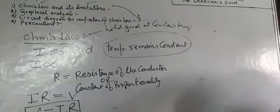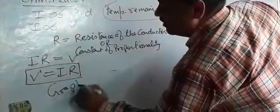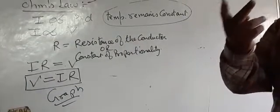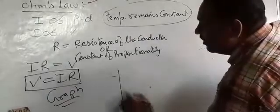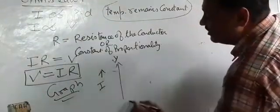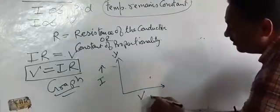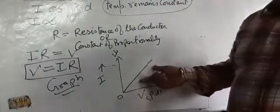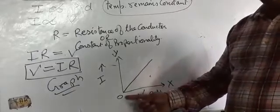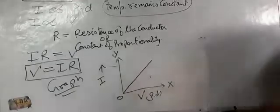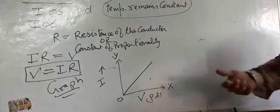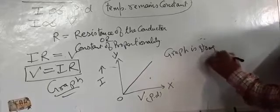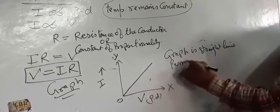Now let us do the graphical analysis for Ohm's Law. Here, current and potential difference are important. We take current on the Y-axis and potential difference on the X-axis. The graph obtained is a straight line passing through the origin O. So the graphical analysis shows a straight line passing through the origin.